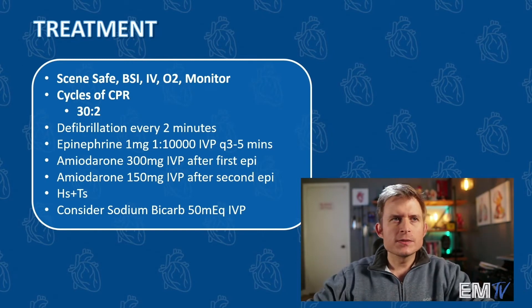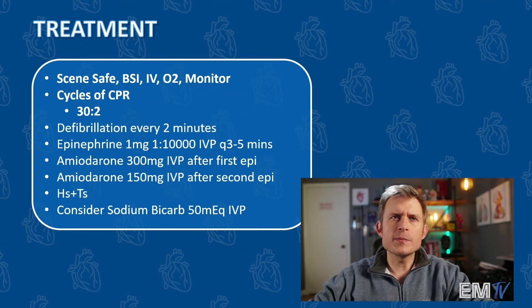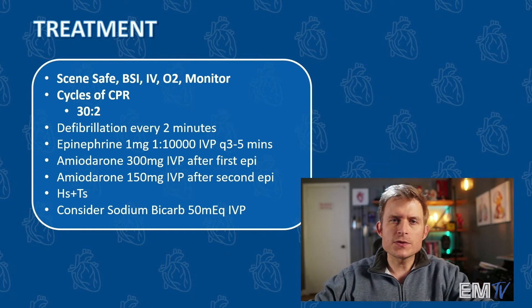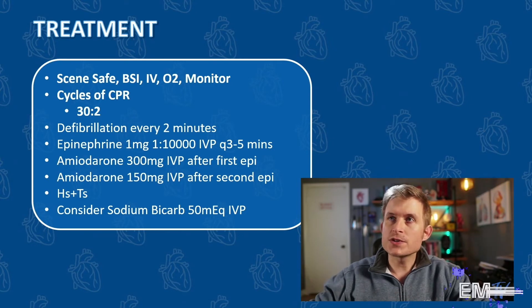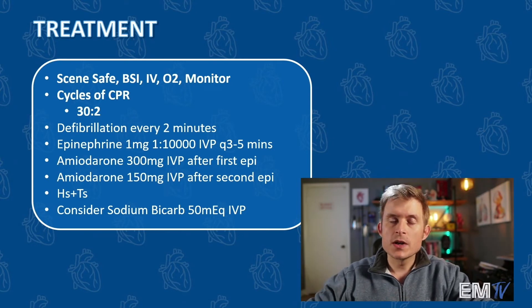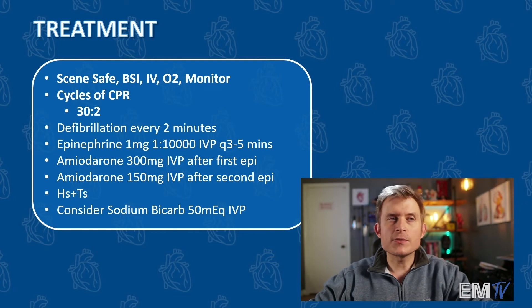My drug of choice here is going to be epinephrine, 1 milligram 1:10,000, given every three to five minutes. I'm going to give a dose of amiodarone, 300 milligrams, after that first dose of epi. This is going to be rapid IV push, just like with all drugs when a person is in cardiac arrest. Then I'm going to give a second dose of amiodarone, 150 milligrams, after the second dose of epi.